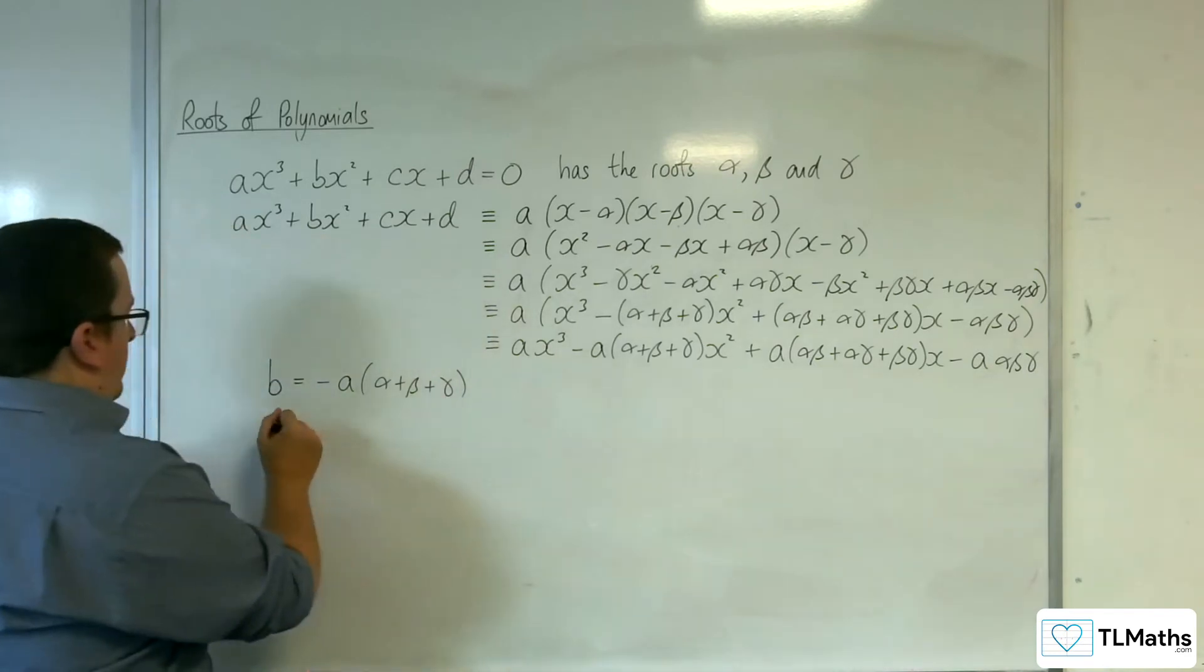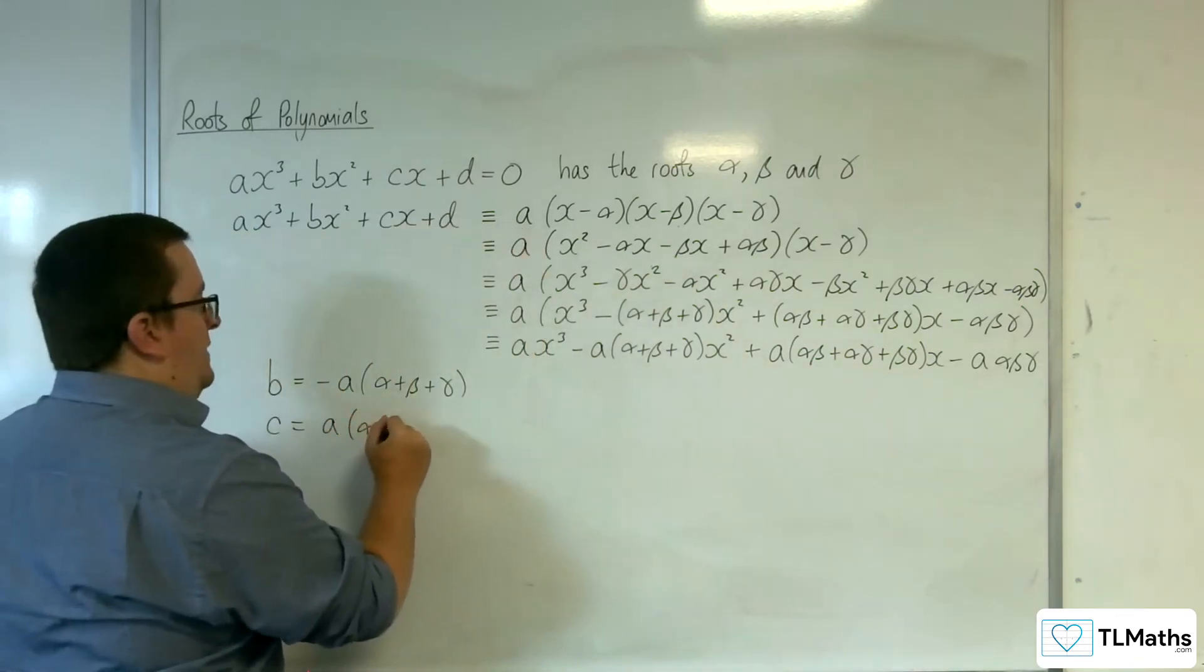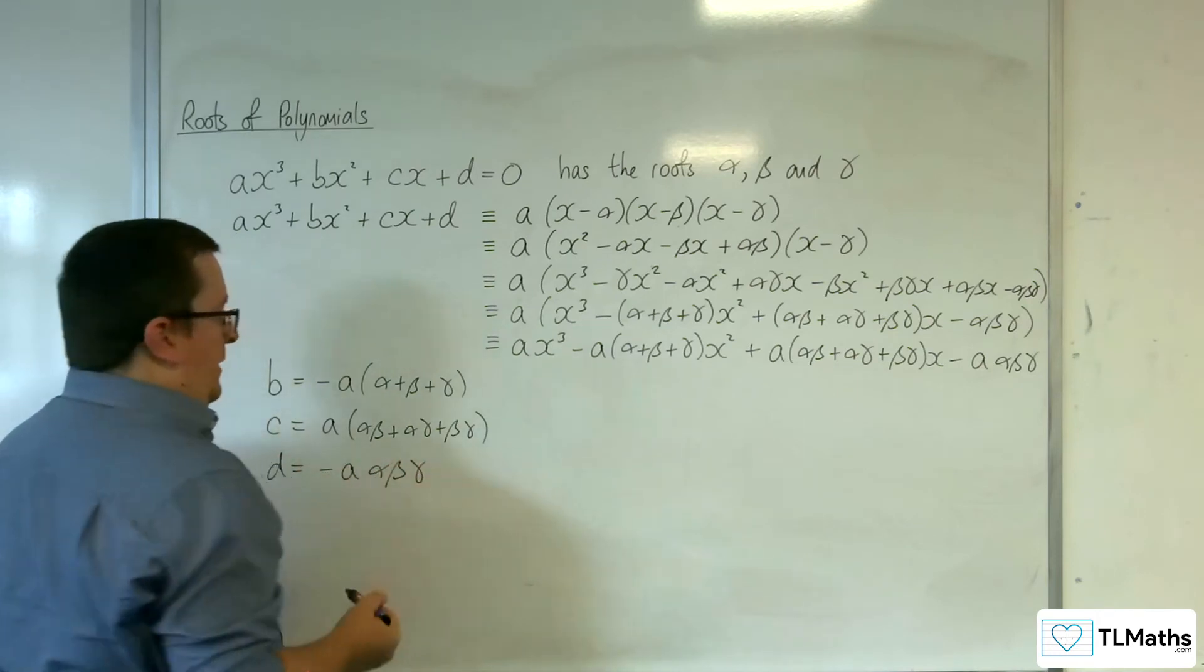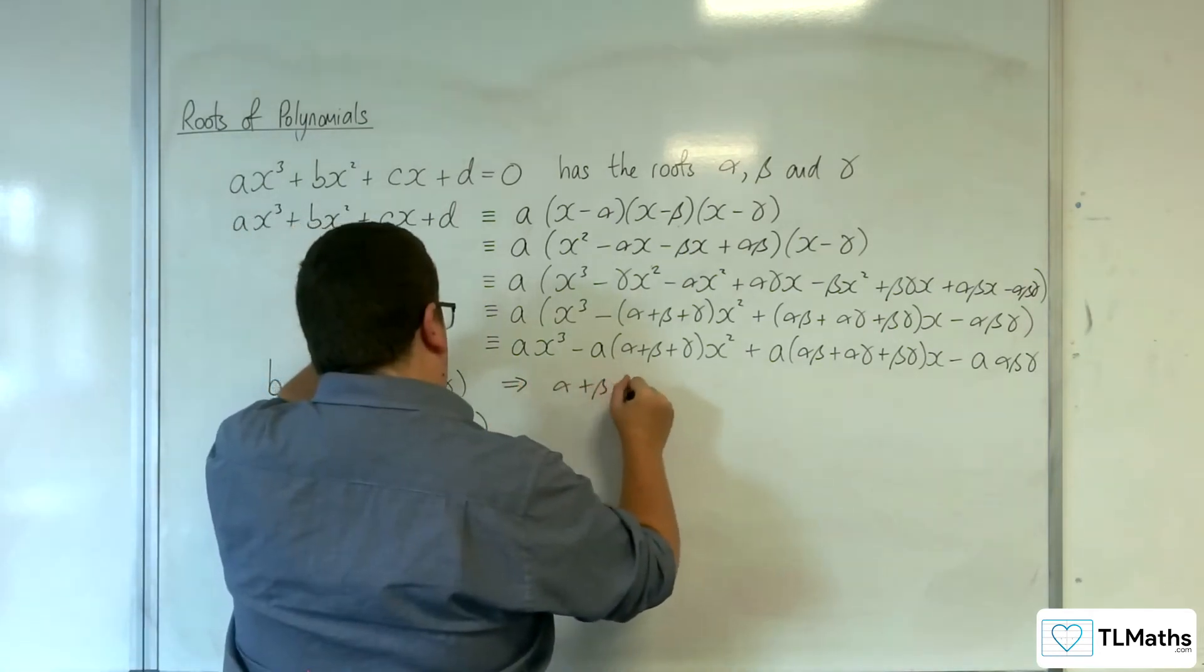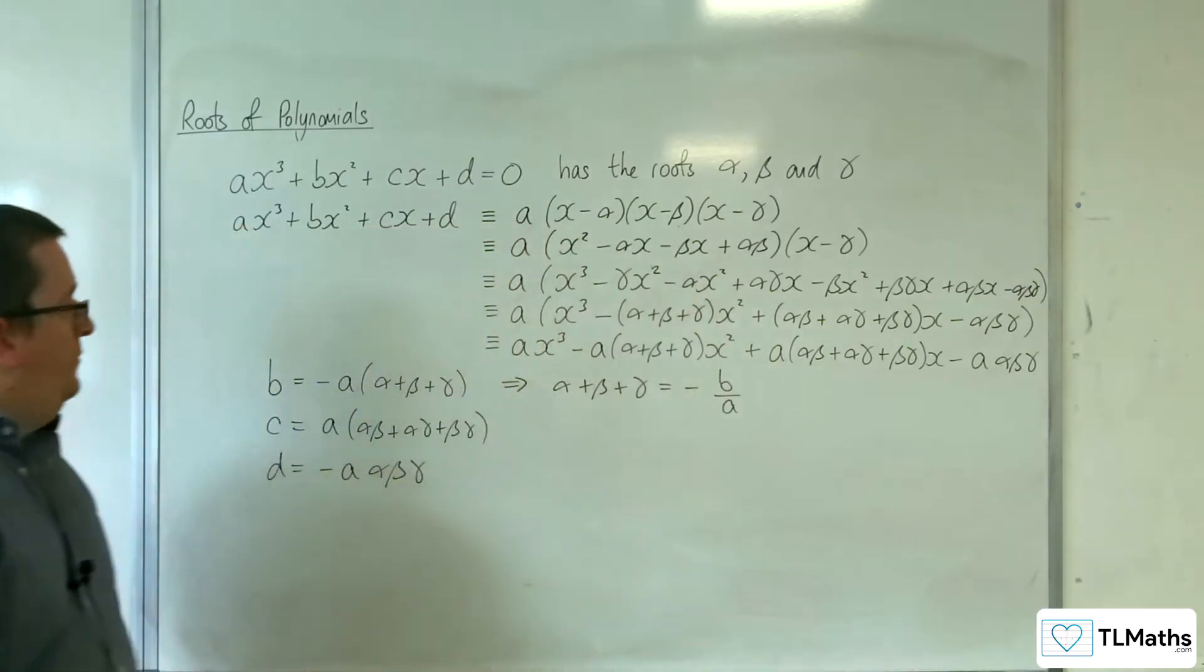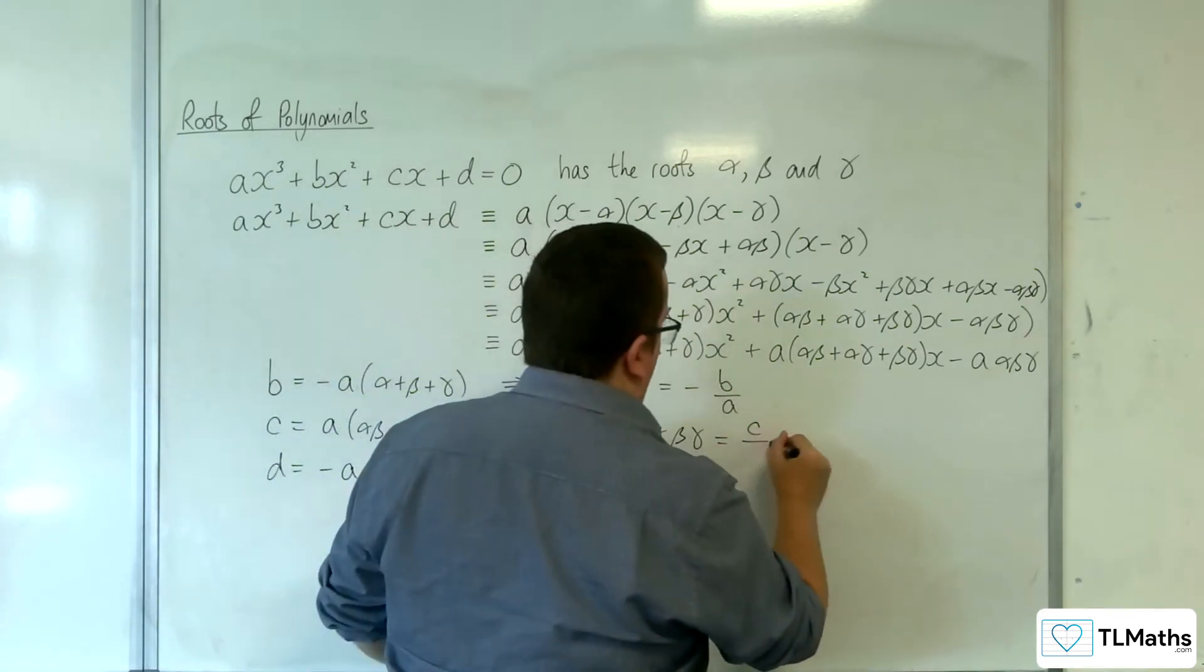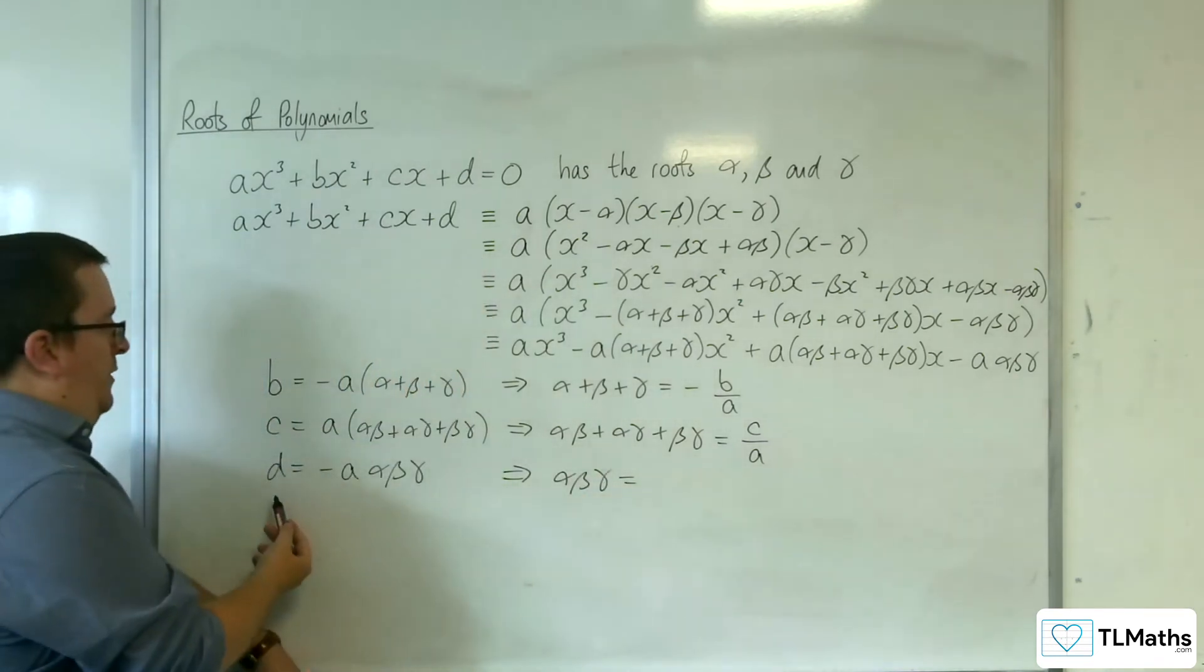I must have that c is equal to a(αβ + αγ + βγ). And I must have that d is equal to -aαβγ. From this, I can say that α + β + γ = -b/a, αβ + αγ + βγ = c/a, and αβγ = -d/a.